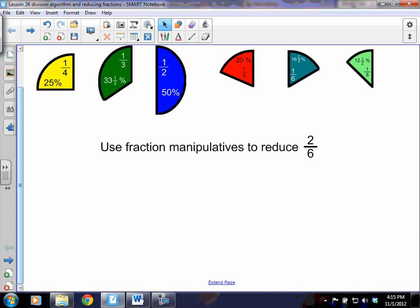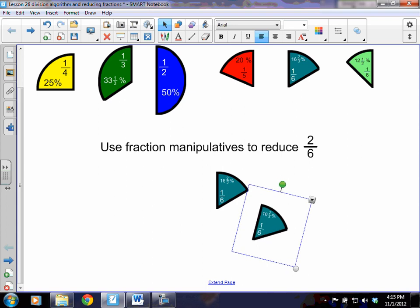We want to start with the fraction 2/6 and we want to understand how the fraction 2/6 can be reduced. So if we bring down 1/6, and now a second 6th, and I'm going to shift these so that they're right next to each other, we can see we have a shape that looks pretty much like this.